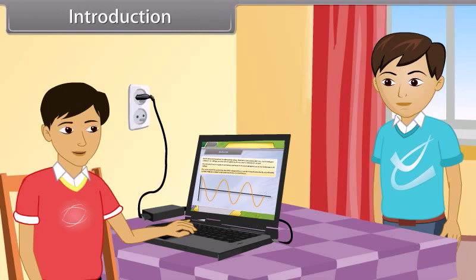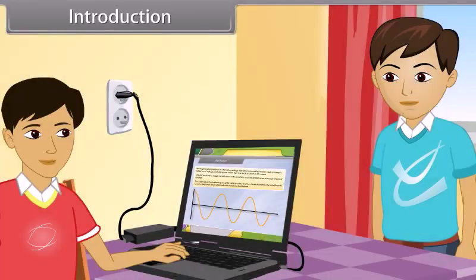I will complete this in 10 to 15 minutes. I want to ask you something. You must know that a laptop works on DC voltage as it has a battery, and the laptop gets charged by plugging the charger into AC voltage. My question is: how is it possible that the laptop works on AC voltage?